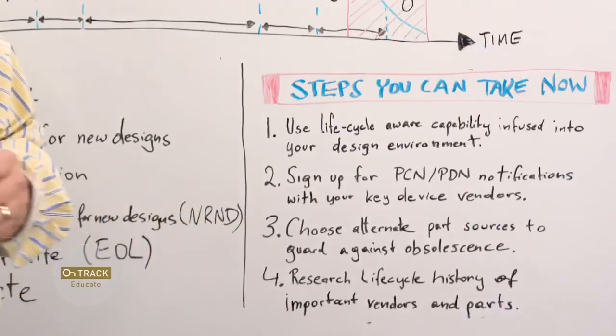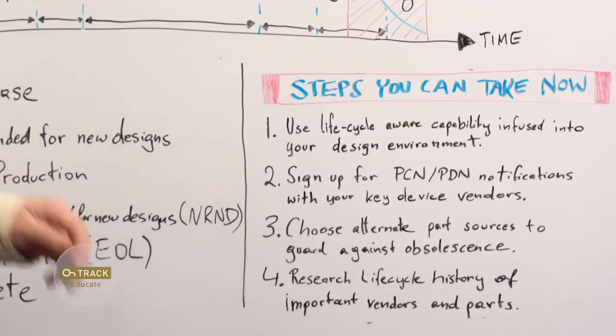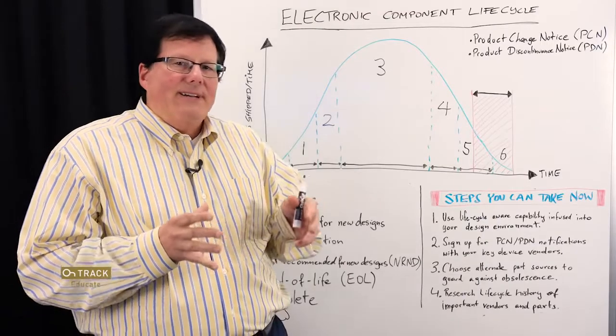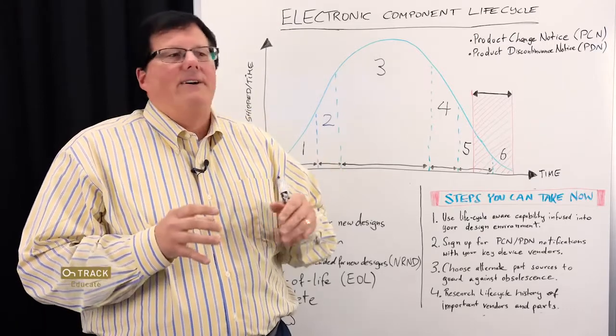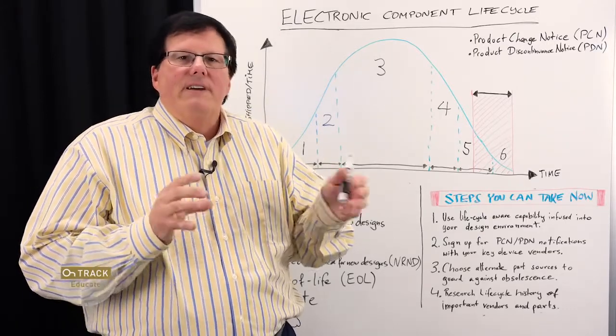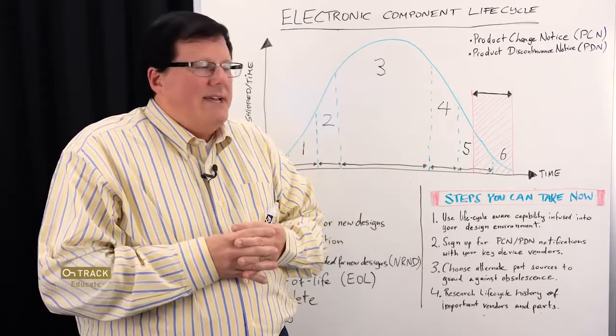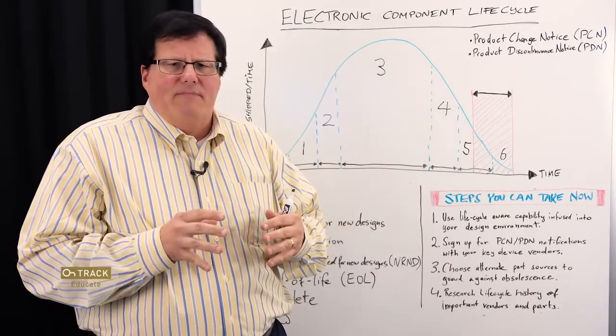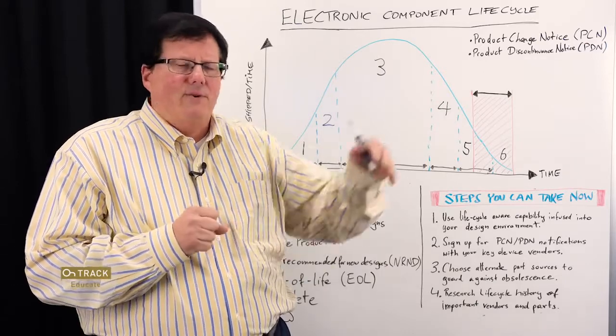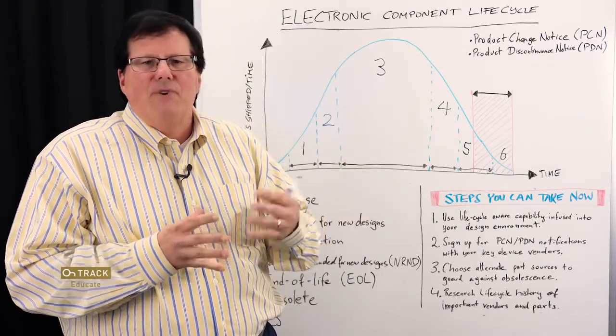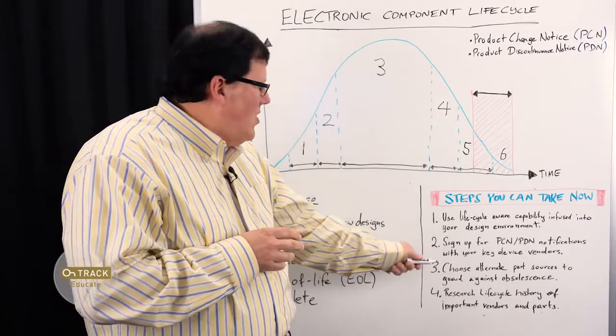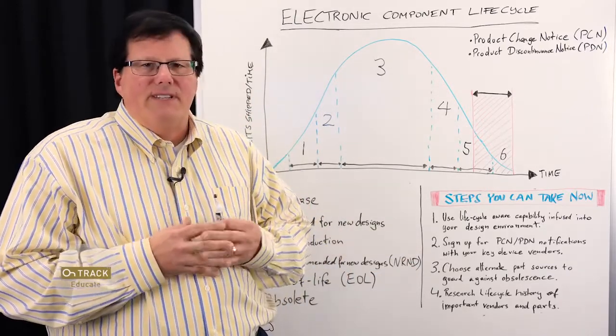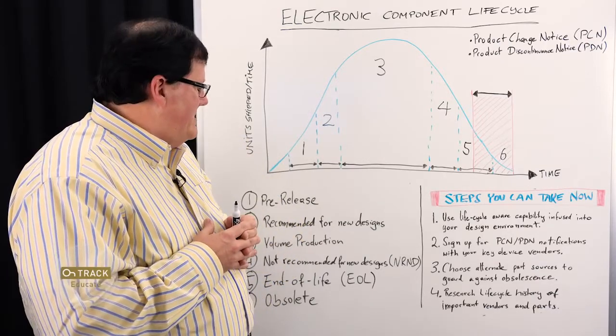It's also helpful to choose alternate parts sources to guard against obsolescence. So in general if you need a specific diode that has a specific reverse current rating, try to choose and find several of them just in case and of course you'll be able to rank which one you prefer but the more alternatives you have the more resilient your design will be against these types of changes.